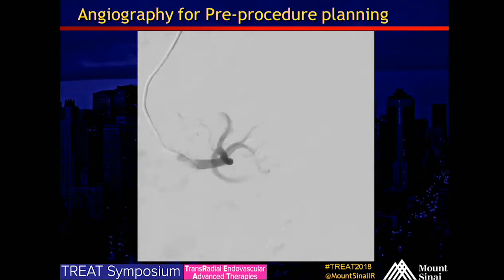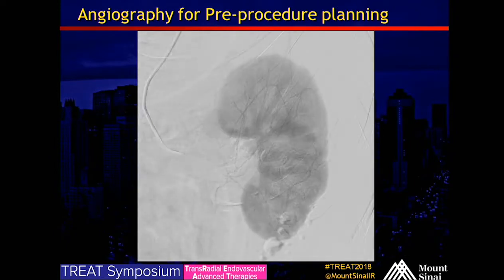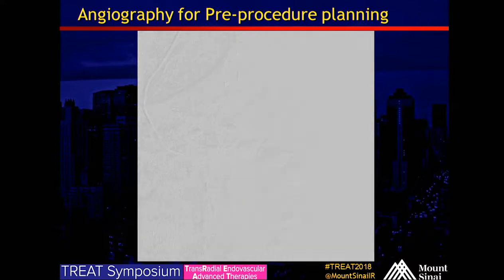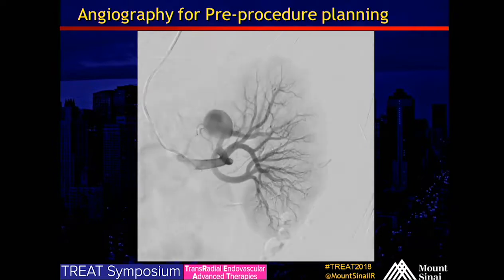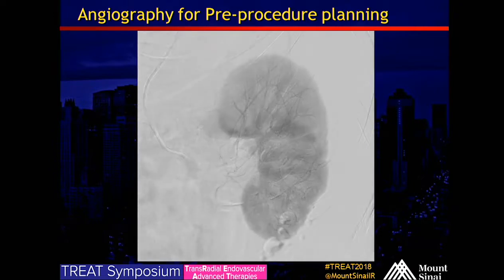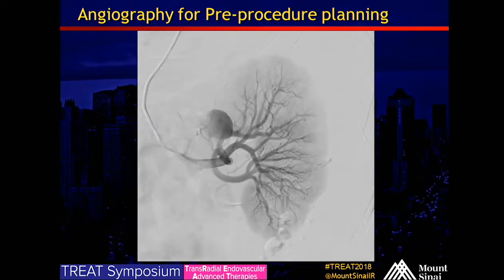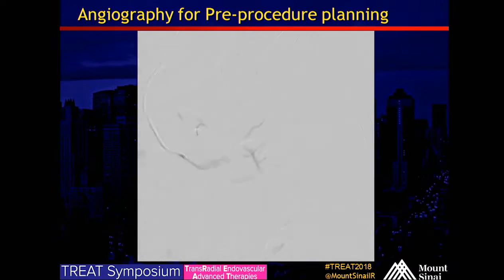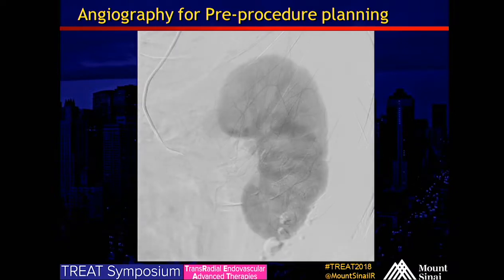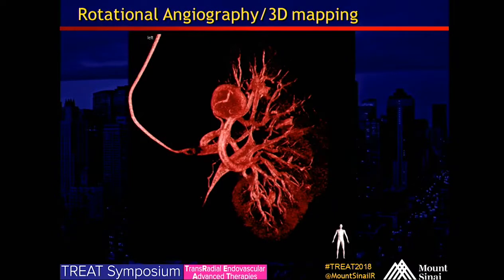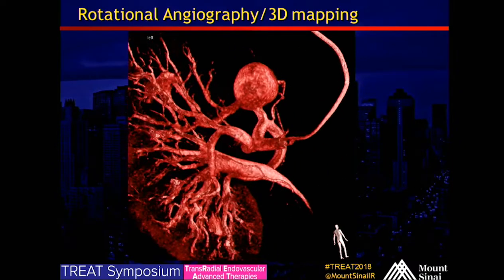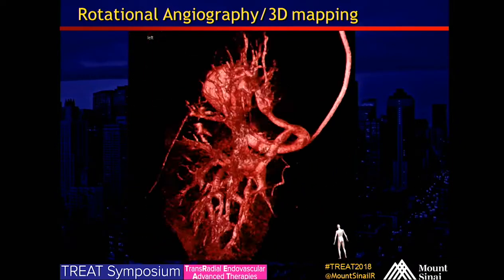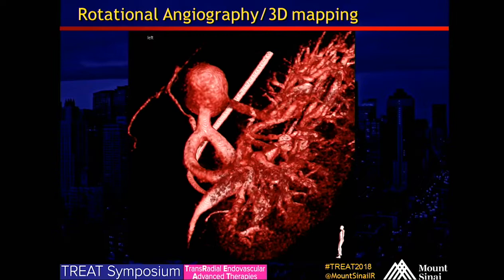A couple weeks ago we brought him for an angiogram for procedure planning. This is our diagnostic angiogram from the left renal artery via radial access, and you can see there's robust filling of that aneurysm off the upper pole branch right there. We did rotational angiography for 3D mapping to prepare for today's procedure.